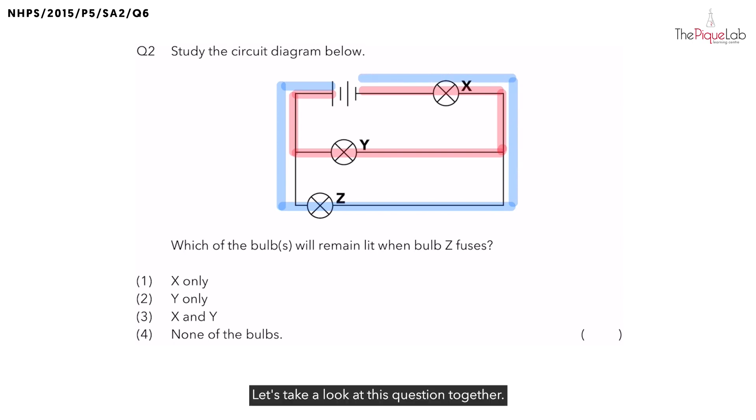Let's take a look at this question together. Which of the bulbs will remain lit when bulb Z fuses? What does it mean when the bulb has fused? This means that there is now an open circuit with bulb Z, and now there is a gap in the blue circuit.